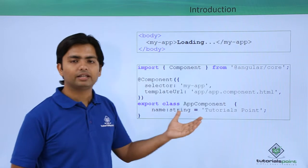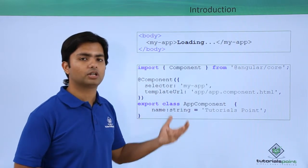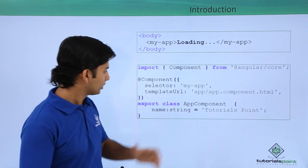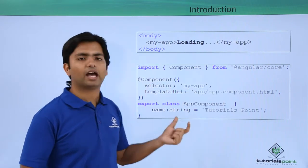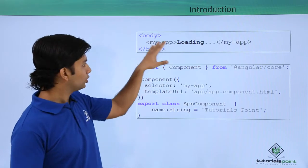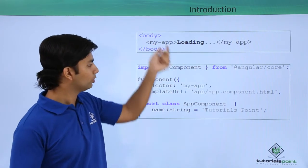So these are basically the metadata, meaning the additional information about your current component. So here as you can see in the selector you have passed my-app. That means this particular tag has all these features. Whenever you will put it,